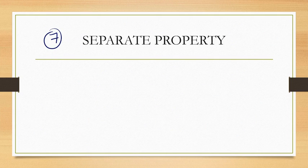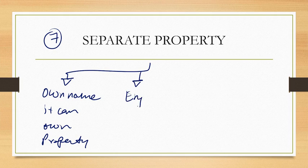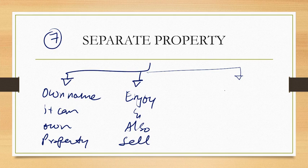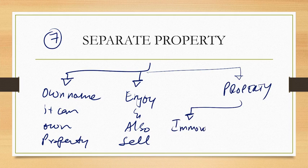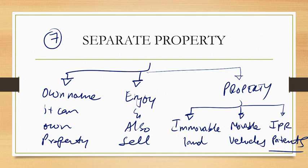The seventh feature of a company is separate property. A company can own property in its own name. The company can own any kind of property — immovable property like land and building, movable property like vehicles and machinery, or intellectual property rights like patents. The company can enjoy and also sell any of this property.